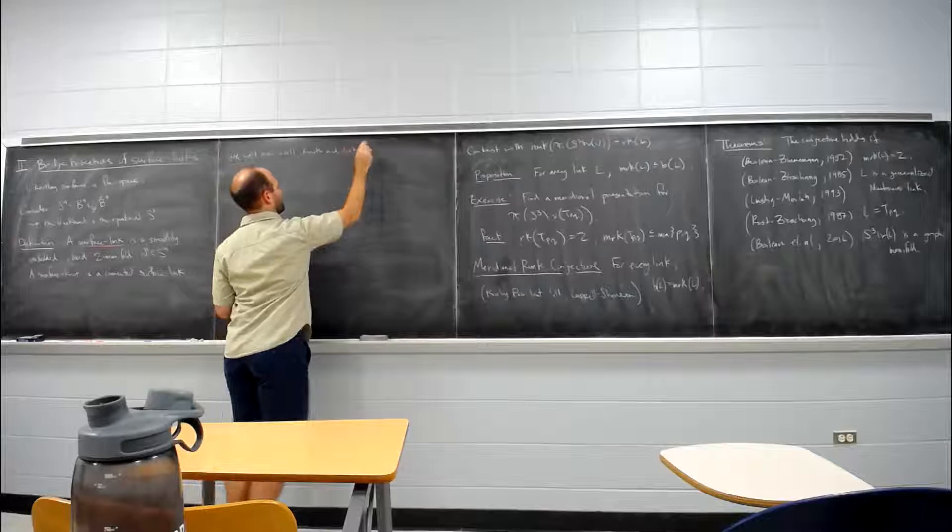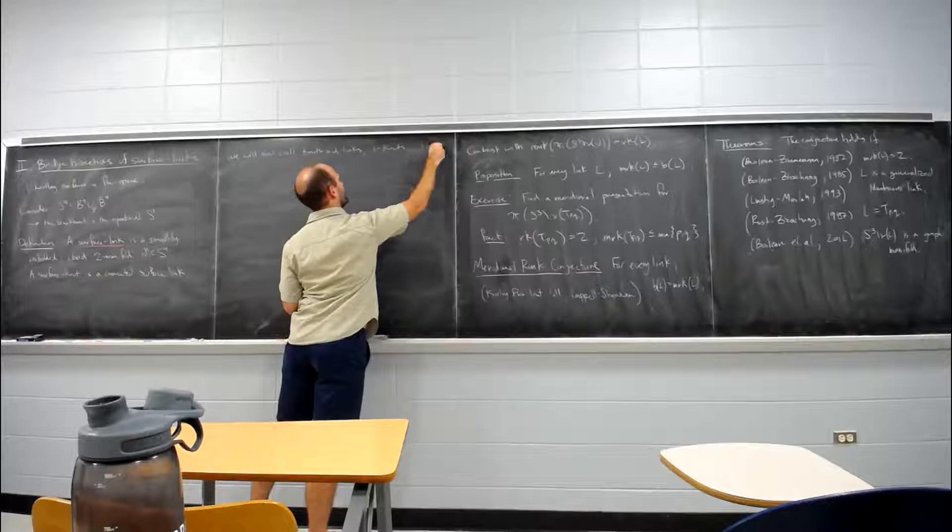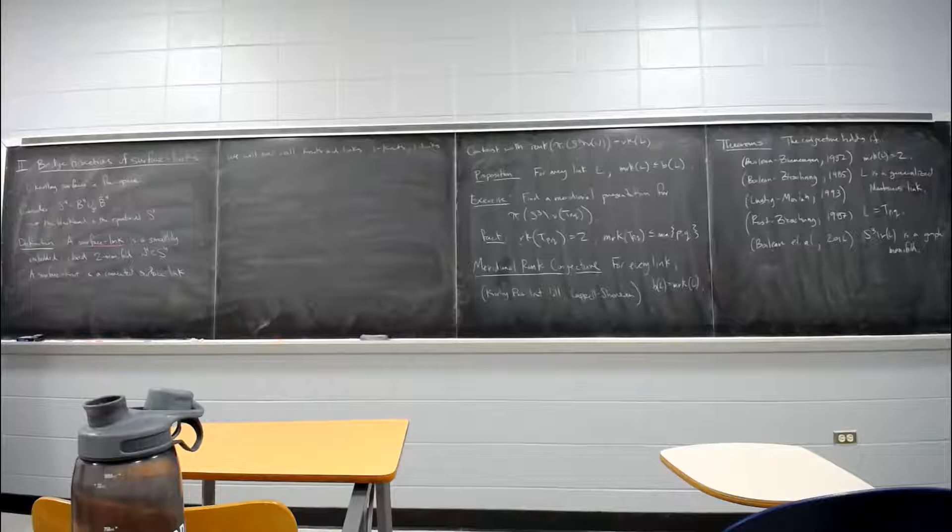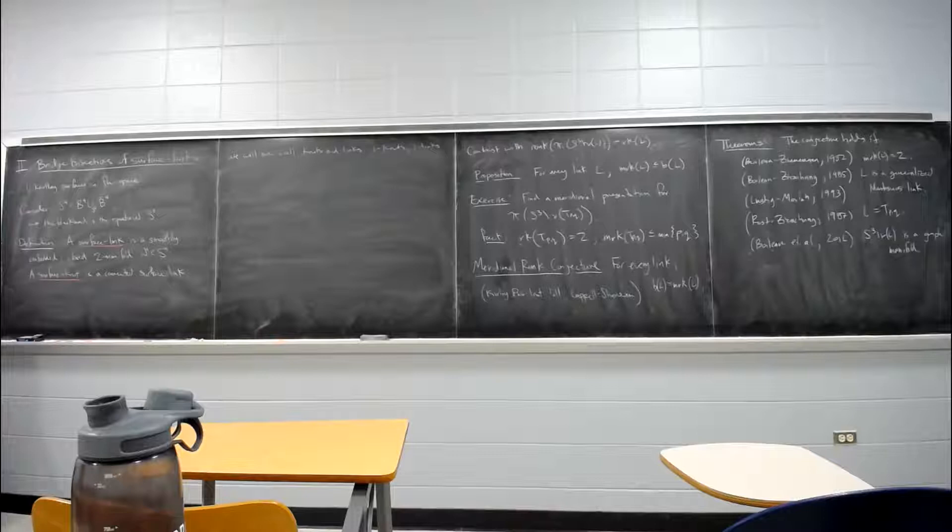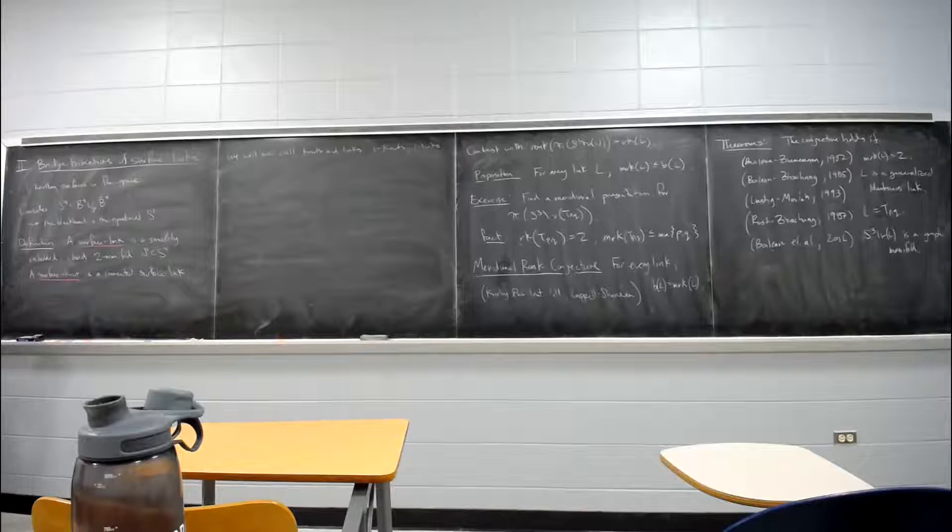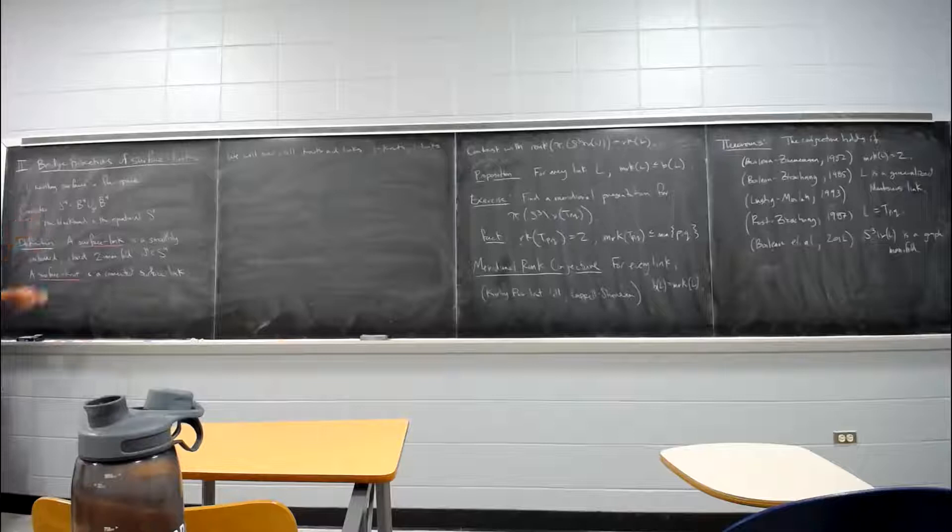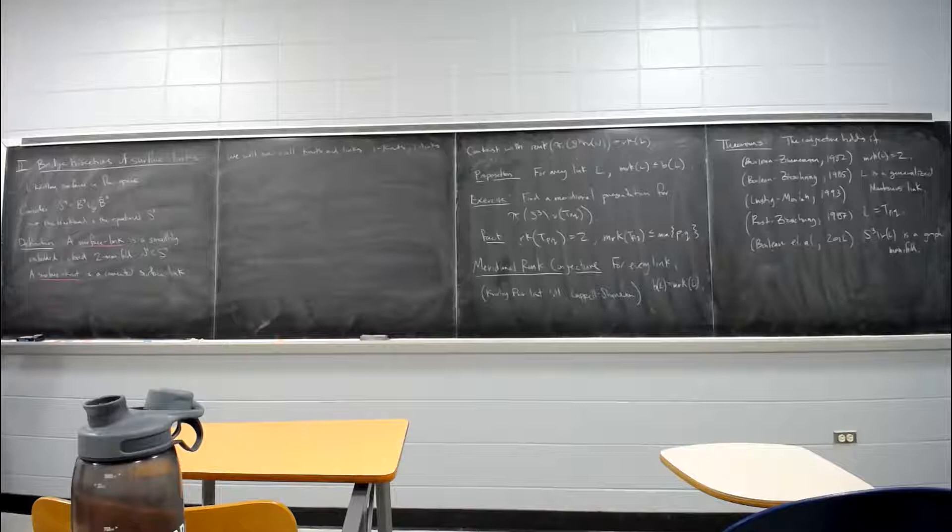We will now call knots and links one knots and one links. So now we have to be a little bit, well we don't really have to be very careful, but I worry about these things way more than I should. I will try to say things like a one knot or a classical knot. Just like we have the one knots and links, a one knot is a connected one link, a surface knot is a connected surface link.